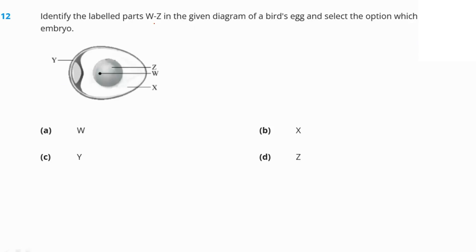Identify the labelled parts W to Z in the figure of a bird's egg. Y is the shell, Z is the yolk, X is the albumin, and W is the embryo. The question asks which label shows the embryo, so W is the answer — option A is our right answer.